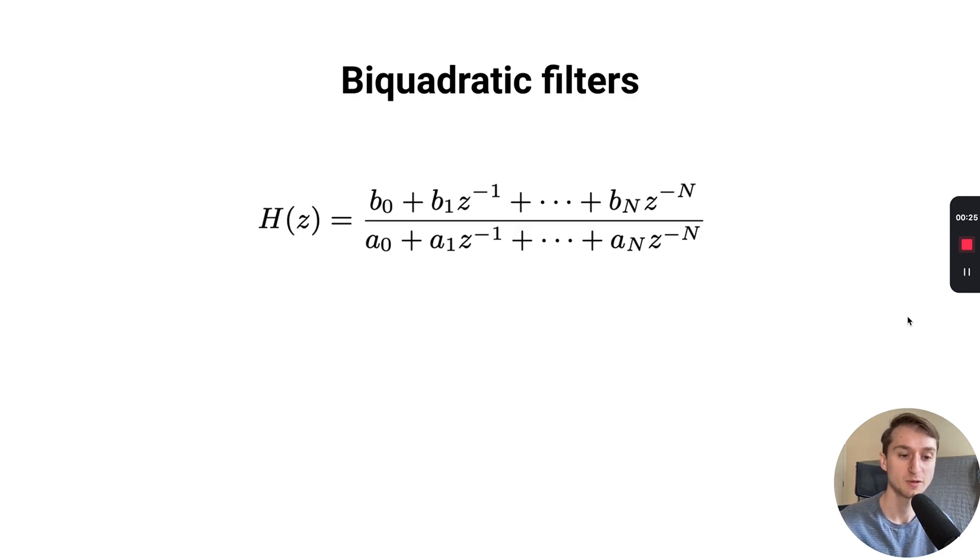So first, let's talk a little bit about infinite impulse response filters and biquadratic filters. Here you can see the transfer function of an nth order infinite impulse response filter. In practice, we make some general assumptions when implementing these filters. For example, we assume that these numerator and denominator coefficients are real numbers.